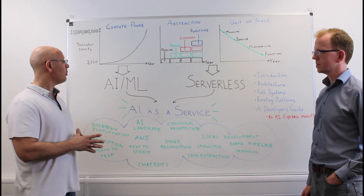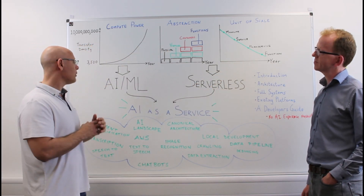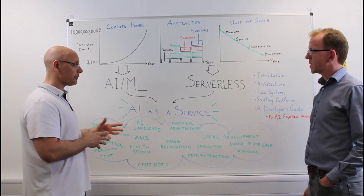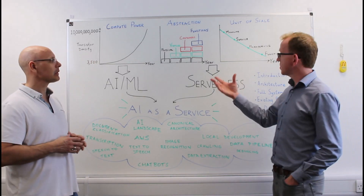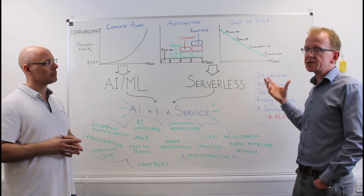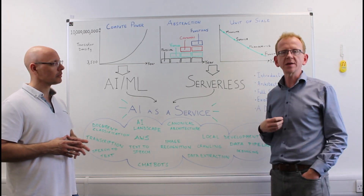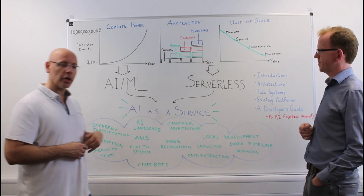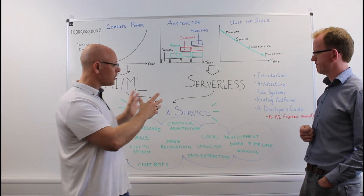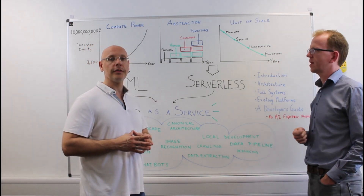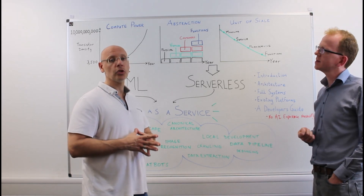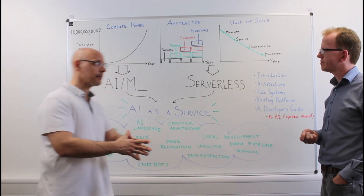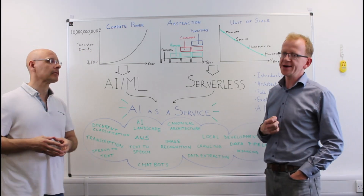That growth in compute power has led to an explosive growth in AI and machine learning services. And the changes in the level of abstraction and units of scale have led to the development of serverless, which we believe is true utility computing in the cloud. It's our belief that these two forces combined will form the de facto standard toolchain for business development over the coming years — which is why we wrote the book AI as a Service.